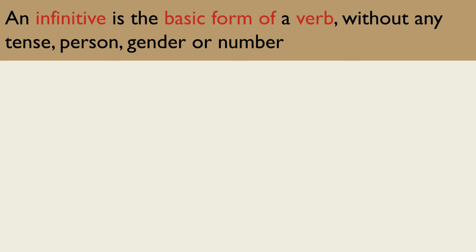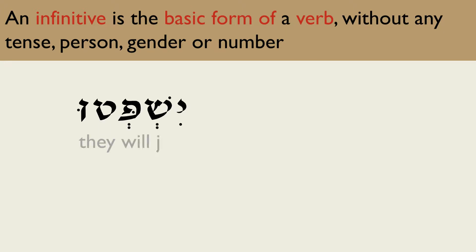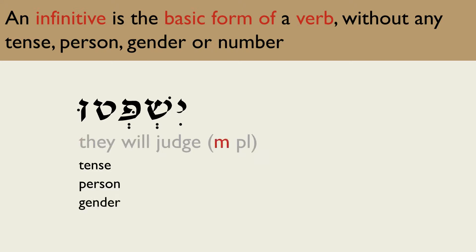Take as an example the verb yishpatu, which means 'they will judge.' This has a tense — future — a person — third person — a gender — masculine — and a number — plural.